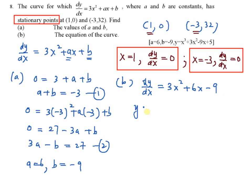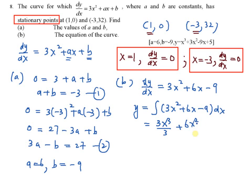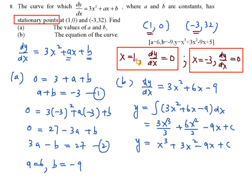To get the equation of the curve, integrate your dy/dx. After integration, you have 3x³ over 3 plus 6x² over 2 minus 9x plus c. Simplifying gives y equals x cubed plus 3x squared minus 9x plus c. Now you need to find c. Substitute the easy point, which is (1, 0), so x equals 1.